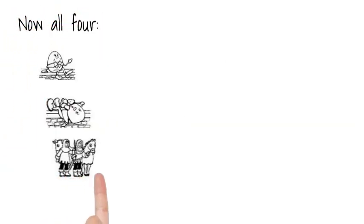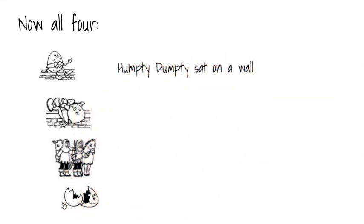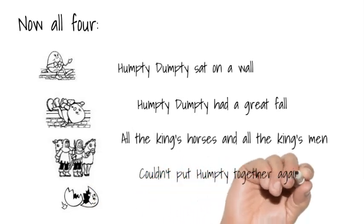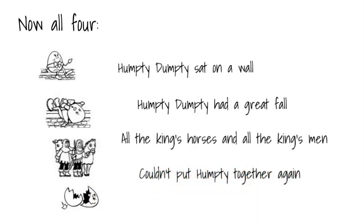Now all four. Humpty Dumpty sat on a wall. Humpty Dumpty had a great fall. All the king's horses and all the king's men couldn't put Humpty together again. Humpty Dumpty sat on a wall. Humpty Dumpty had a great fall. All the king's horses and all the king's men couldn't put Humpty together again. Thank you for watching.